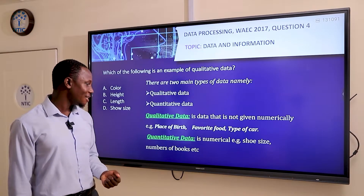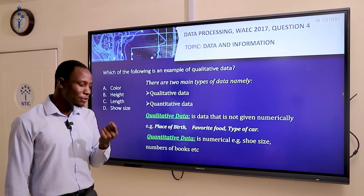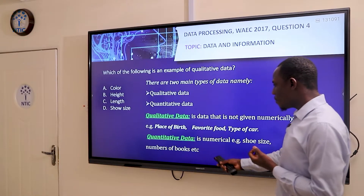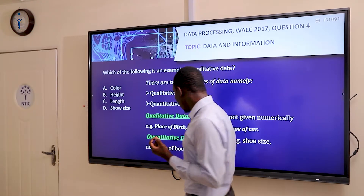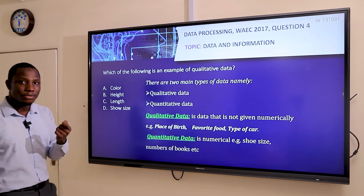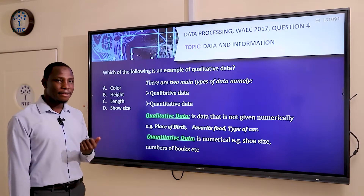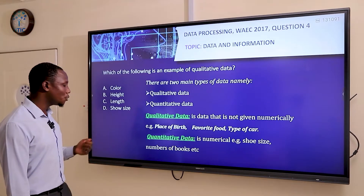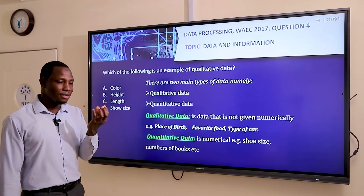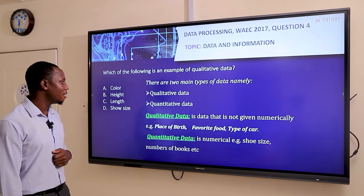Quantitative data is numerical. Examples include shoe size and number of books, which both have numbers associated with them. Looking at the options, height has a number, length has a number, and shoe size has a number. Therefore color has no physical quantity, so our answer is A, which is color, because it doesn't have any quantity.